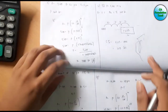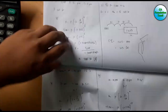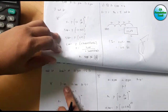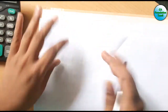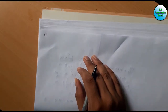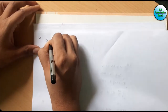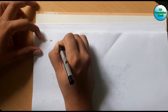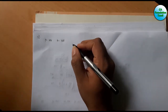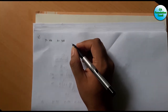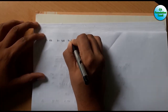Let the sum of money be P equal to 100. Since the amount is tripled, A is equal to 3 times P, so A equals 300. The rate of interest R is equal to 8 percent.